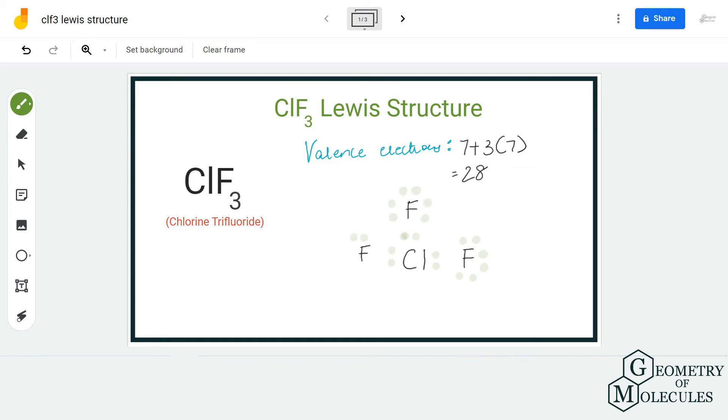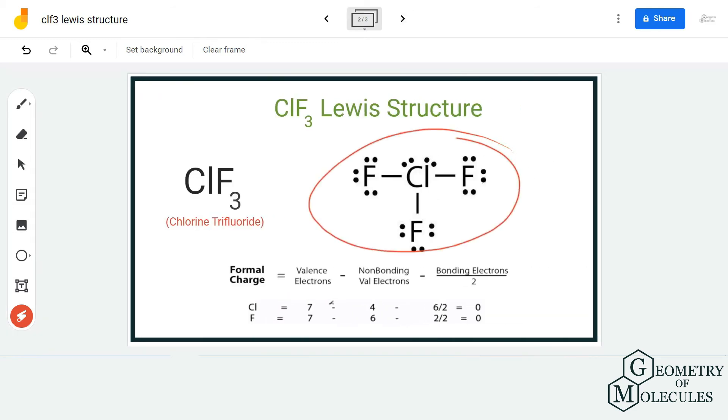Let's check the formal charges. This is the formula that you can use, or you can also calculate it using the link that we have given in our description box below. For chlorine, there are seven valence electrons, of which four are non-bonding and six are bonding, and it has a formal charge of zero.